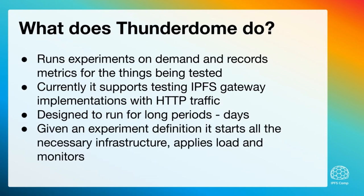So what does Thunderdome do? It runs experiments on demand and it captures all the metrics from those experiments and exports those to Grafana so that we can view the results. It currently supports testing IPFS gateway implementations with HTTP traffic, but there's nothing in the architecture that stops it from testing other things — that's just what our focus has been on so far.